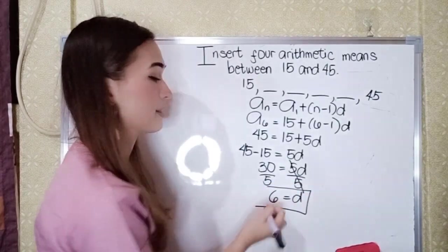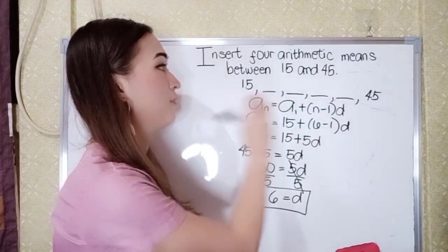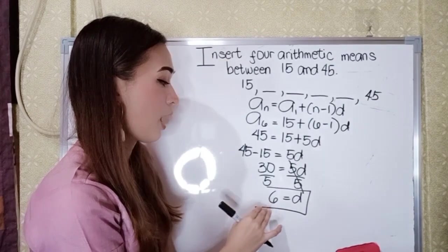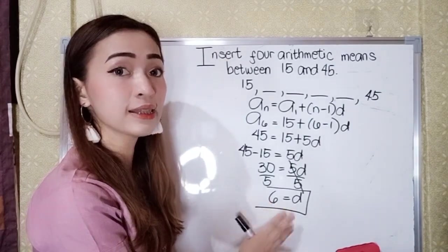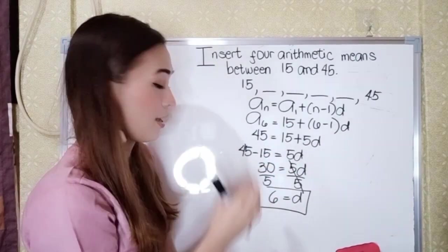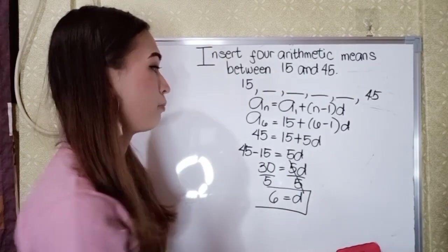So now, what are the 4 numbers between 15 and 45? So what we're going to do, since we all know that 6 is the distance between each number, so what we're going to do is just to add 6 each term.